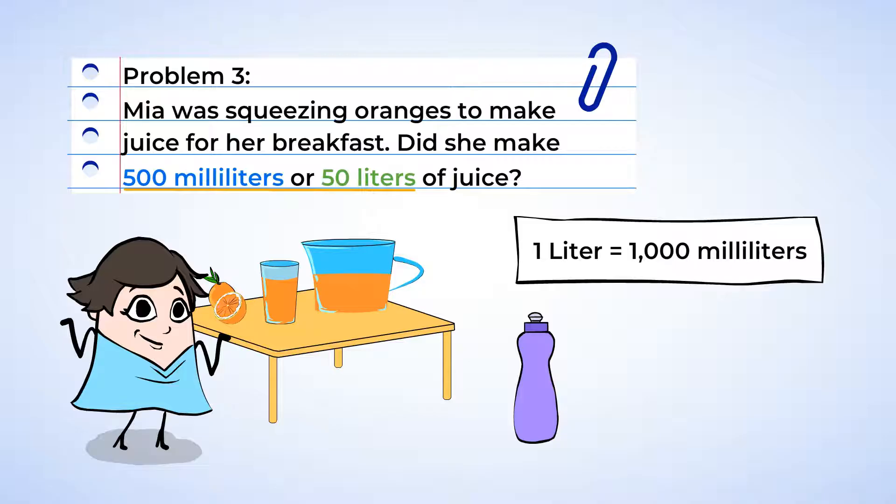Now, let's look at the options that we were given. 500 milliliters would be half of a sports bottle of juice. And 50 liters would be 50 sports bottles worth of juice. Mia's hands would be pretty tired after making that much juice. And I also wonder where she'd find that many oranges. Mia must have made 500 milliliters of juice for breakfast.